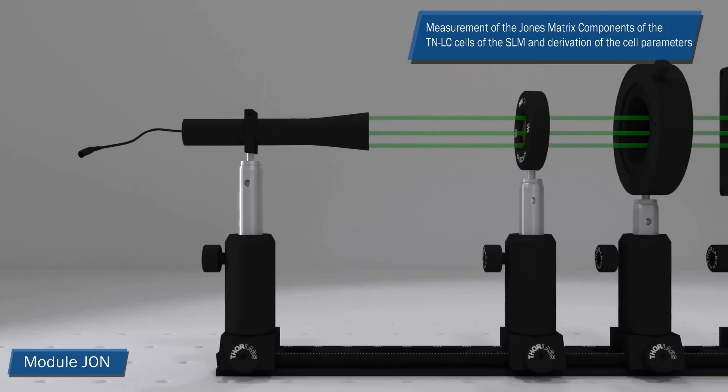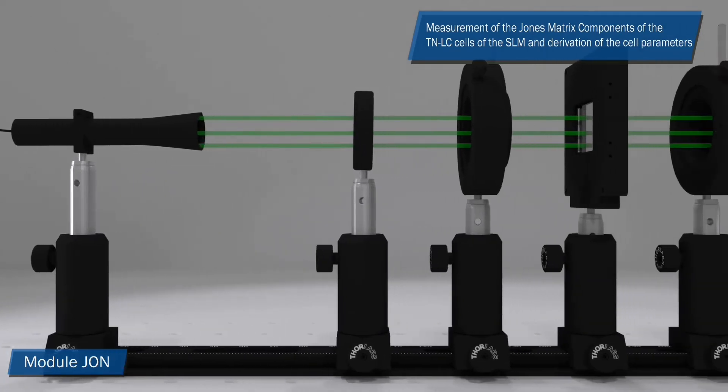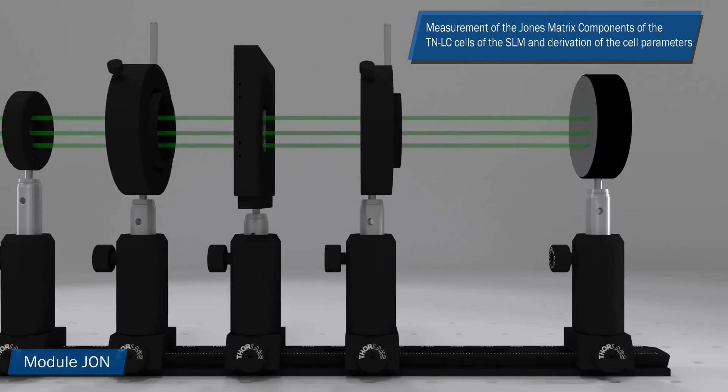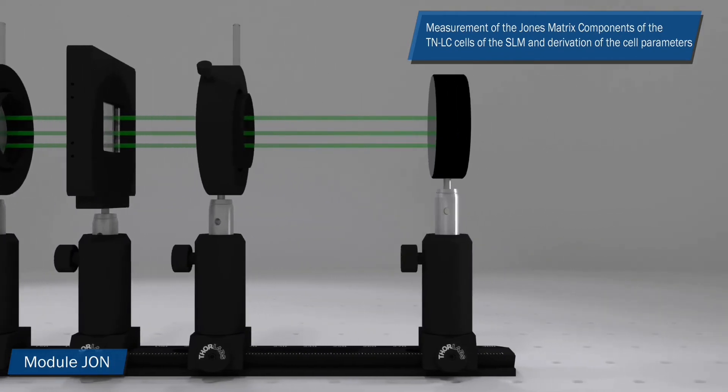The JON module deals with measurements of the Jones matrix components of the twisted pneumatic LC cells of the SLM display and the derivation of the cell parameters.